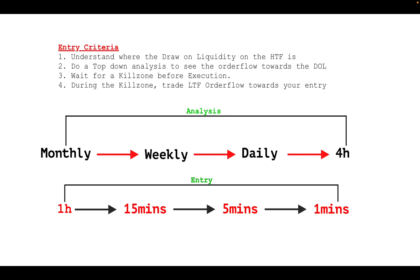You wait for a consolidation before execution. During the consolidation, trade lower timeframe order flow towards your entry. Once you are in the consolidation, you trade from the one-hour, 15-minute, five-minute, and one-minute timeframes towards your draw liquidity. If your draw liquidity is on the four-hour timeframe, you can find an entry on the one-minute timeframe and enter towards it.